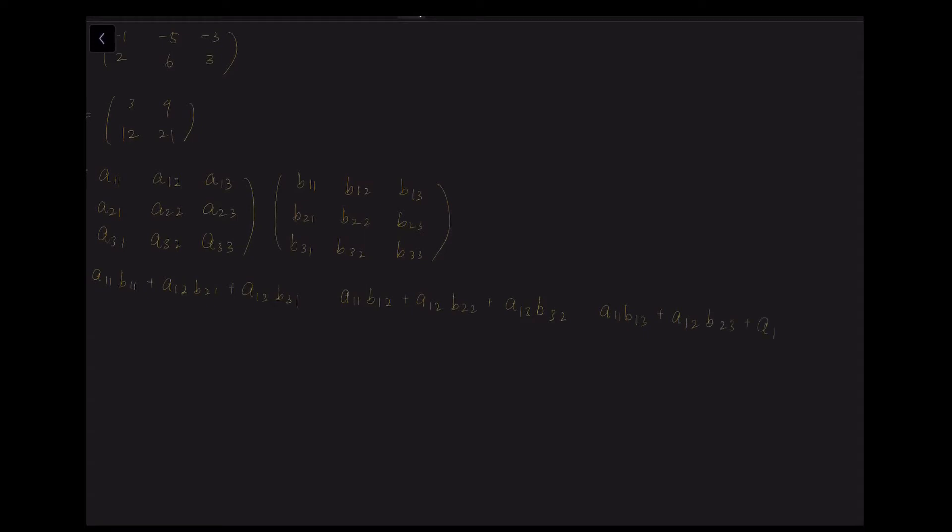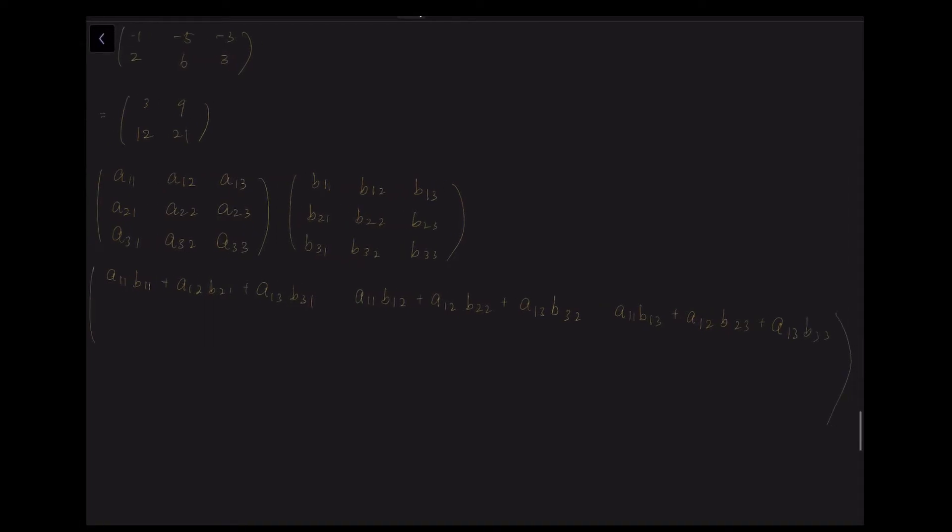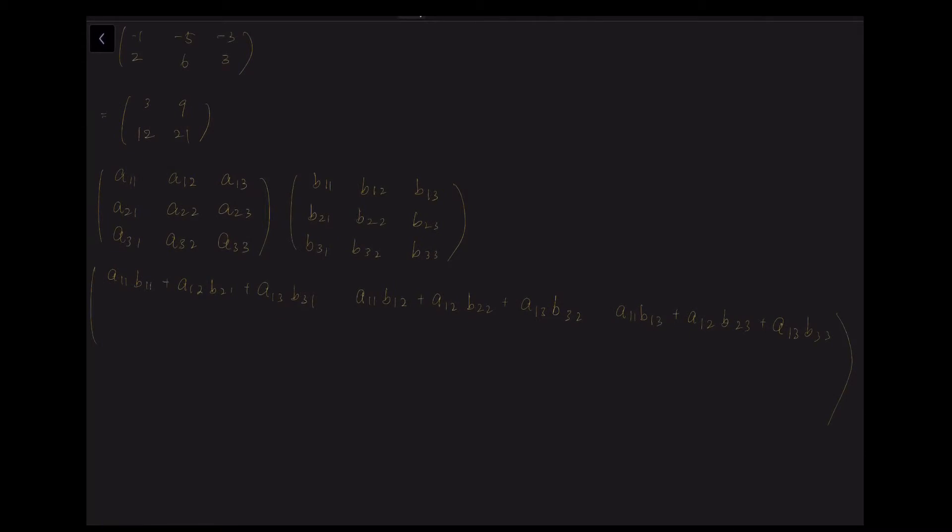Then we will move on to the second row. So the second row we have A21, A22 and A23 components. And we will multiply it or do the scalar product with each of the column of the second matrix. So A21 times B11 plus A22 times B21 plus A23 times B31. Next is the second column: A21 times B12 plus A22 times B22 plus A23 times B32.